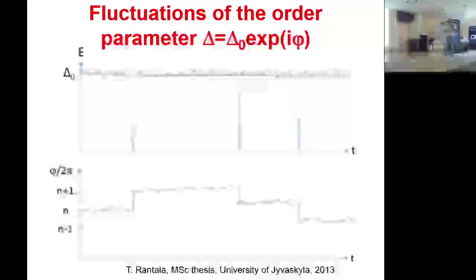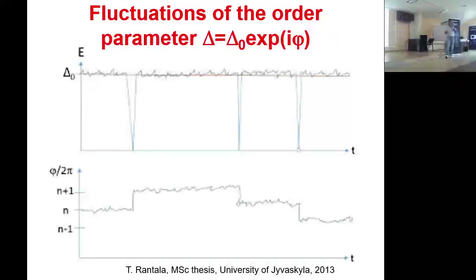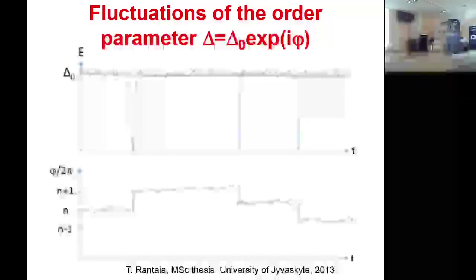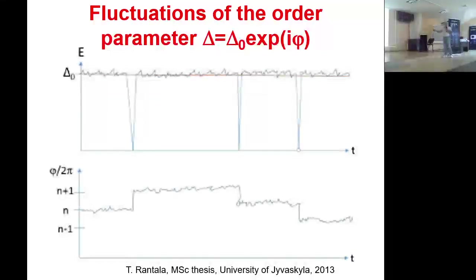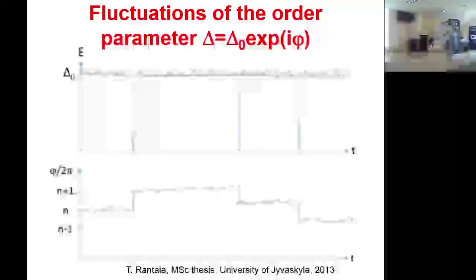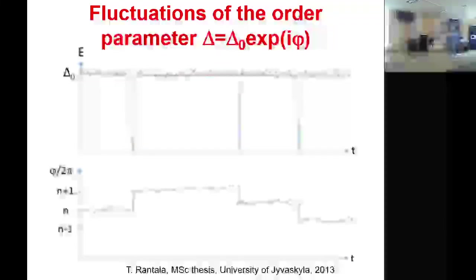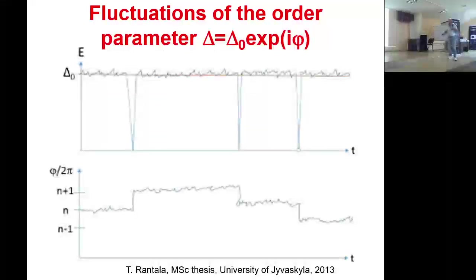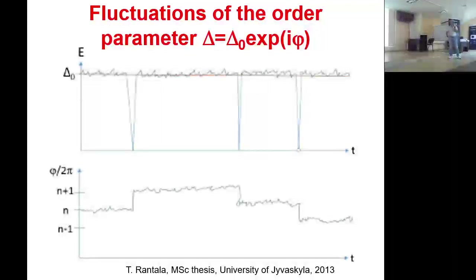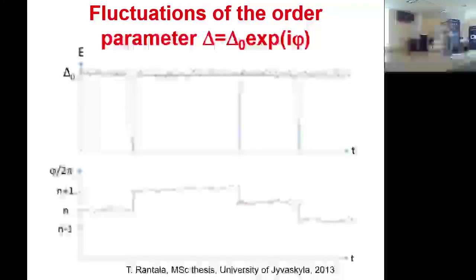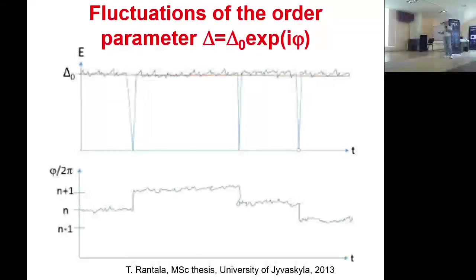Параметр порядка — комплексная величина, поэтому флуктуировать может как амплитуда, так и фаза. Периодически происходят провалы амплитуды до нормального состояния, а фаза в эти моменты может меняться на ±2π. Этот эффект называется квантовым проскальзыванием фазы — quantum phase slip, сокращённо QPS. Именно об этих эффектах я буду говорить сегодня.